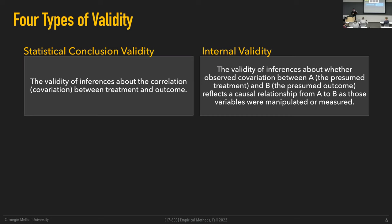Internal validity is the second category. This is about whether the relationship, the co-variation, the correlation you're observing actually reflects the true nature of the causal relationship between those variables. Remember we talked about three ingredients for establishing a causal relationship. Internal validity is about whether you actually have all three of those ingredients — to what extent the things you've established statistically actually reflect the criteria needed to make causal claims.